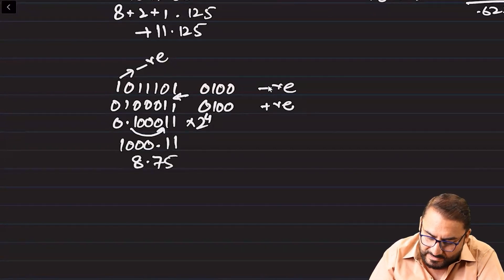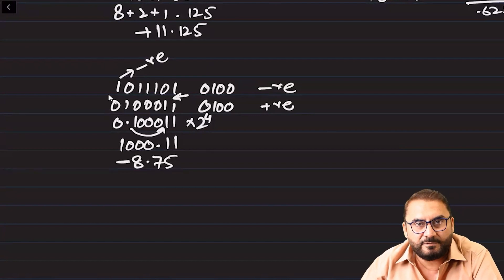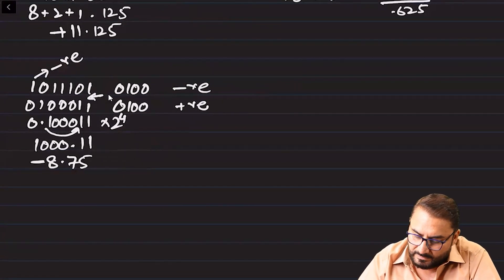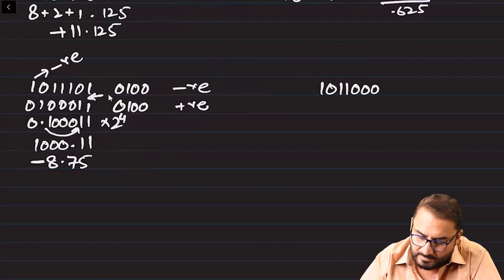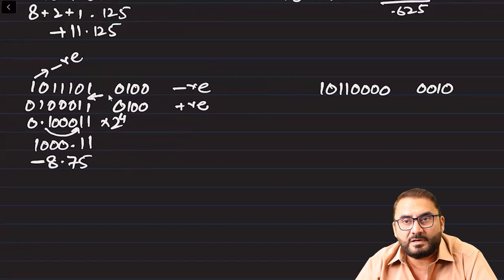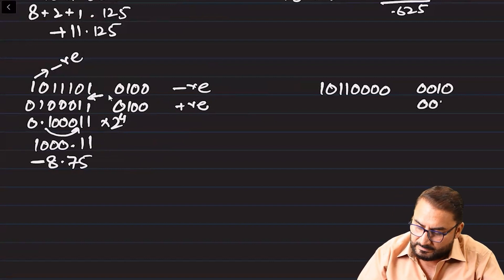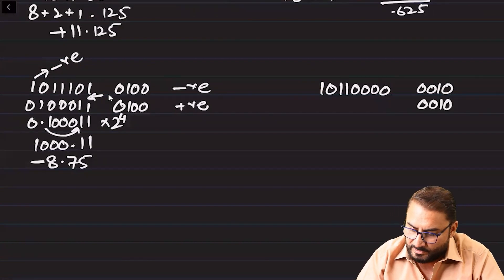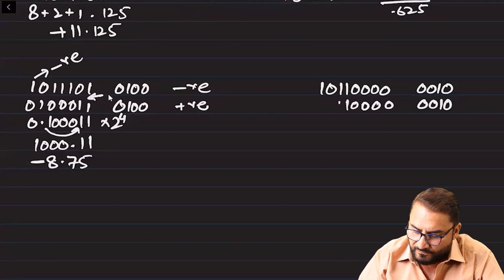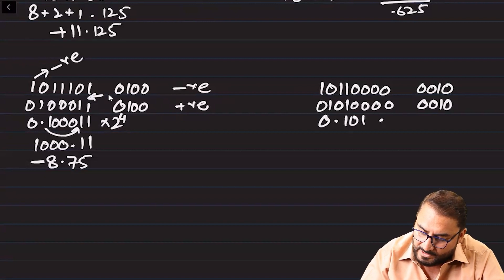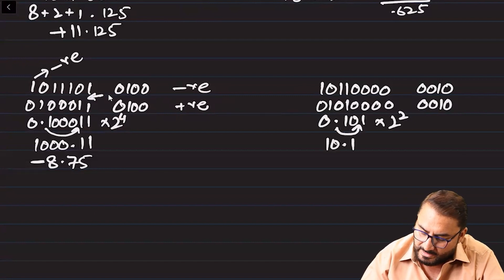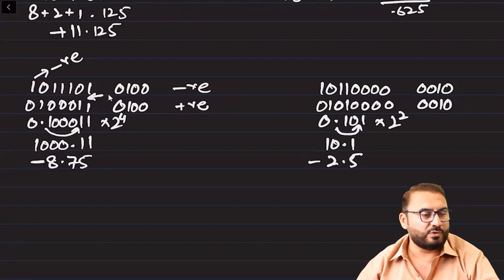Moving the point four times gives us 1110.011. This is one, two, four, eight — so fifteen — wait, one plus two plus four plus eight equals fifteen, plus 0.75, giving us negative 15.75. Now another number: 1011 0001 — one two three four five six seven eight — with exponent 0010. Since it is negative, we convert to positive first: keep exponent same, keep from right to first one same, flip the rest. This gives 101 times two to the power two, so 10.1 — which is two point five — and the answer is negative 2.5.